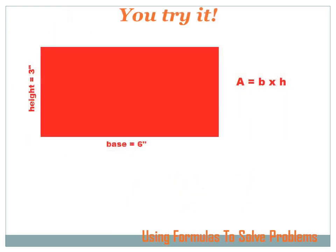Now you try it. Figure out the area of this red rectangle. The formula is A, area, equals base times height. And we give you the base, and we give you the height. Hit the pause key, do this problem yourself, and hit the forward key to go on to the answer.